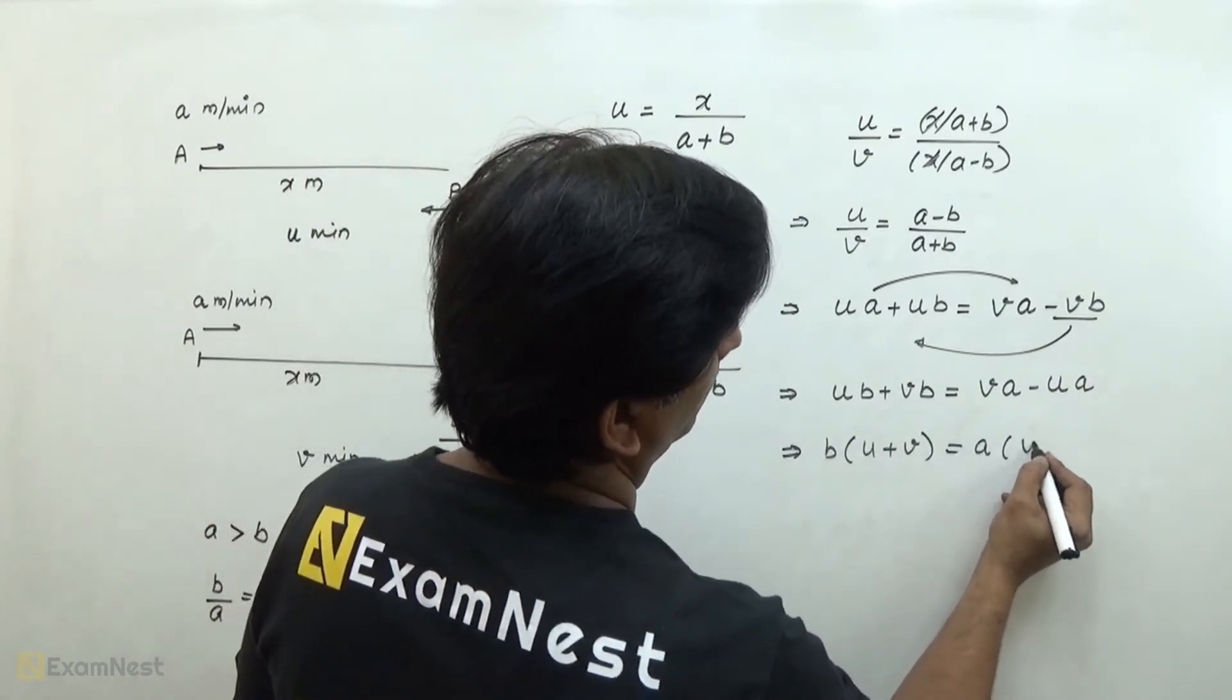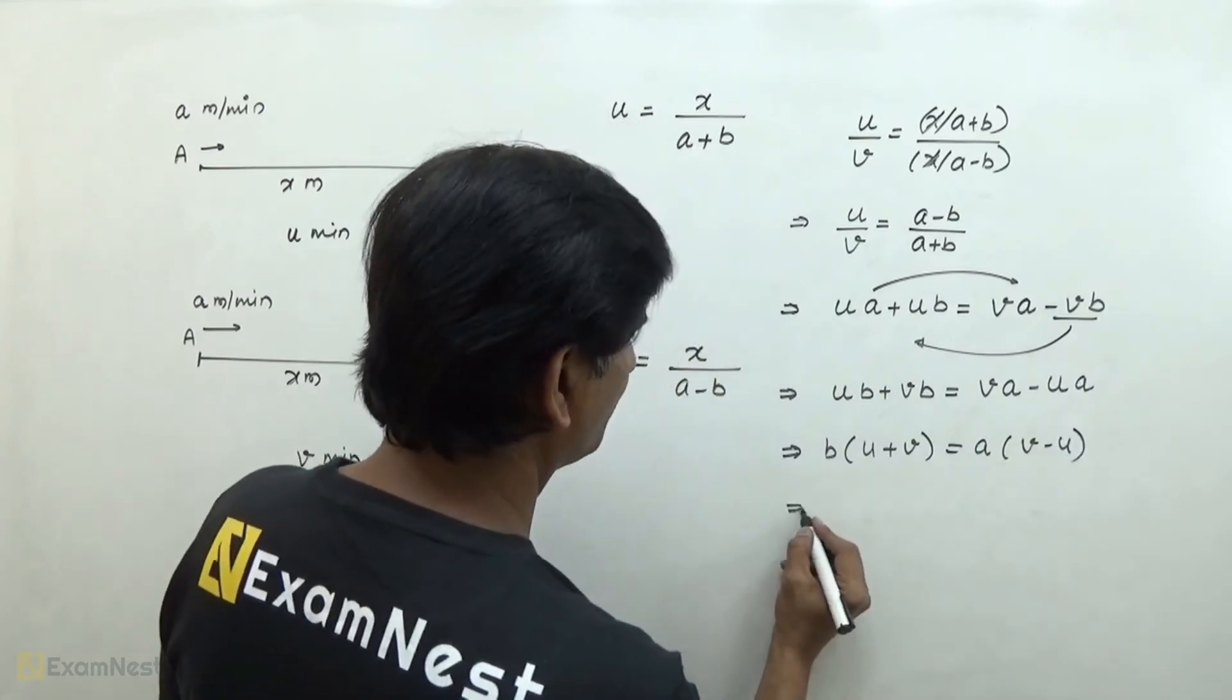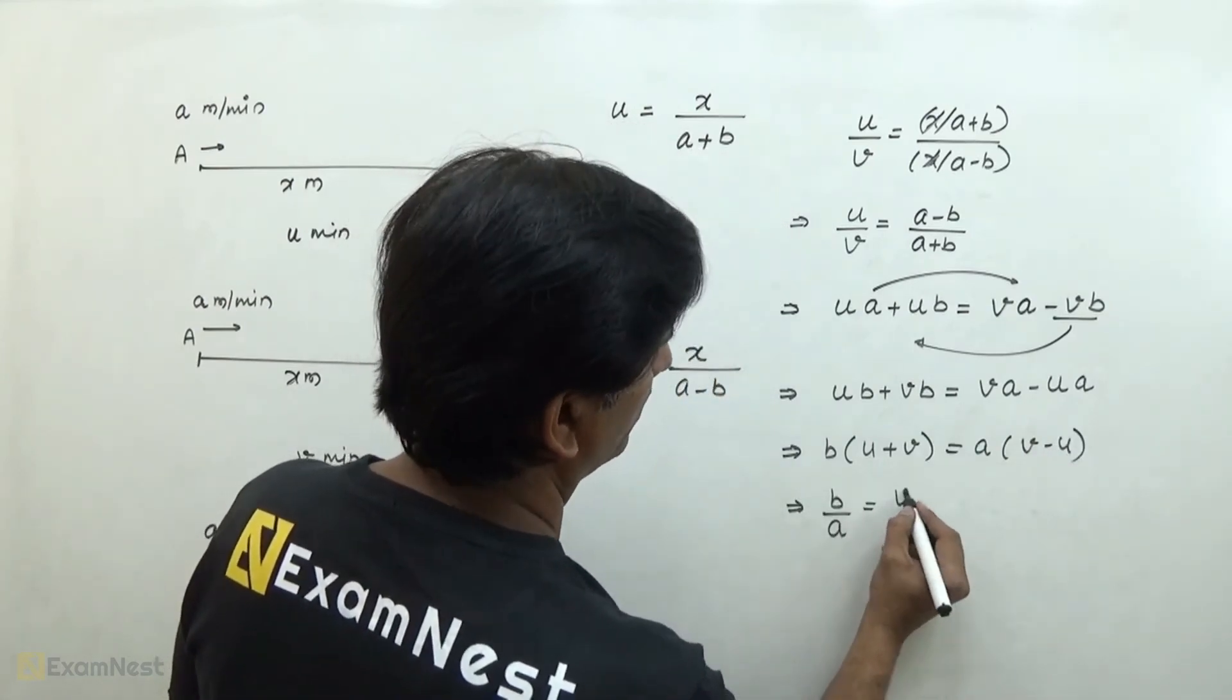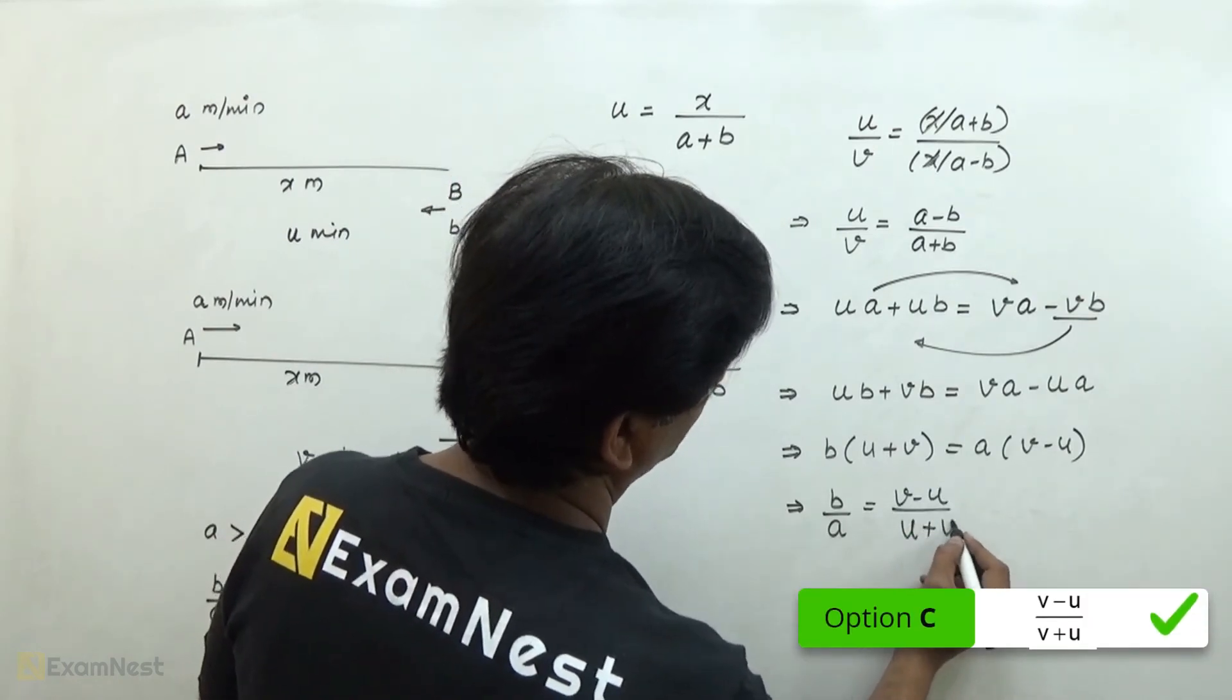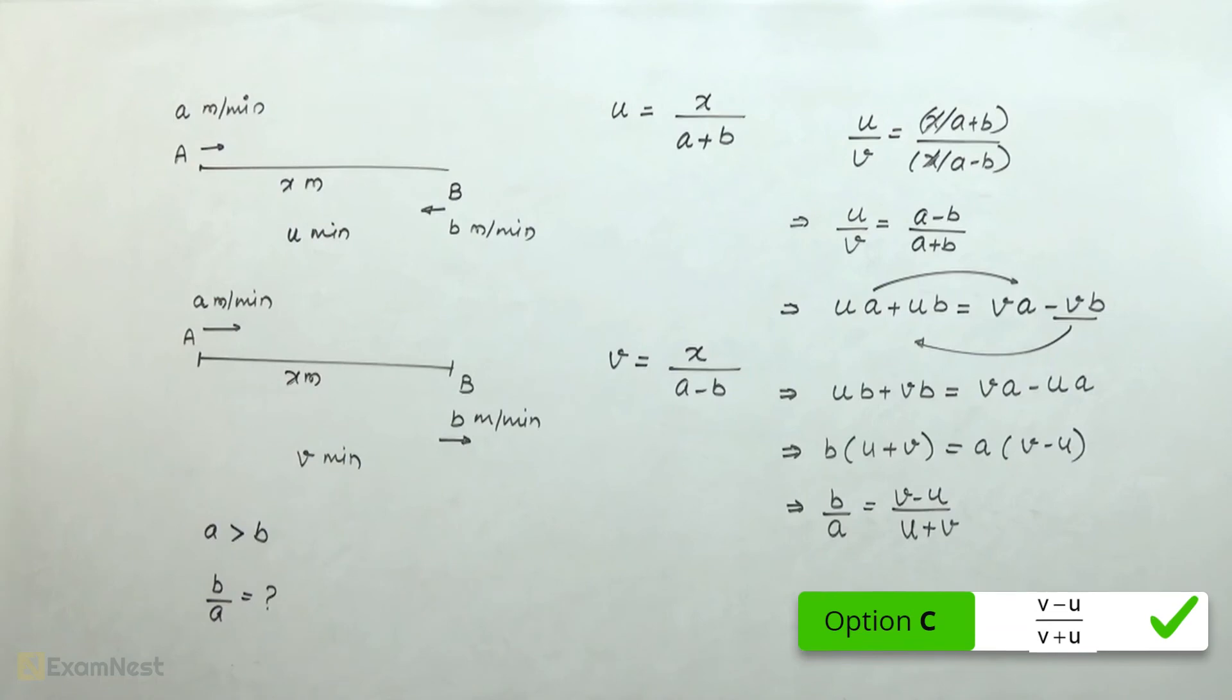From a we can take common, v minus u. Therefore, b over a is equal to (v minus u) over (v plus u).